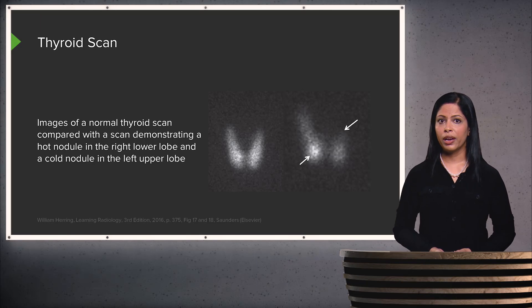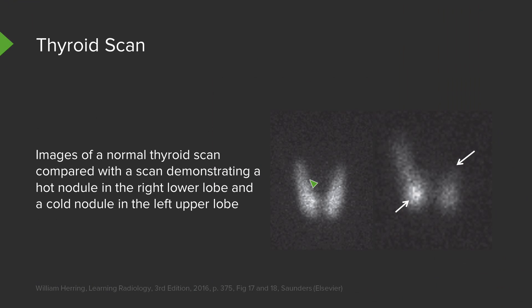This is an example of a normal thyroid scan compared with an abnormal scan. You can see normal symmetric uptake within the thyroid gland on the normal scan — no photopenic areas and no abnormally bright areas. However, on the abnormal scan on the right, there are two different areas: a hot nodule in the lower lobe on the right, and an area of photopenia in the left upper lobe, which is an example of a cold nodule. The next step for this patient would be ultrasound, and likely an ultrasound-guided fine needle aspiration of the cold nodule in the left upper lobe.